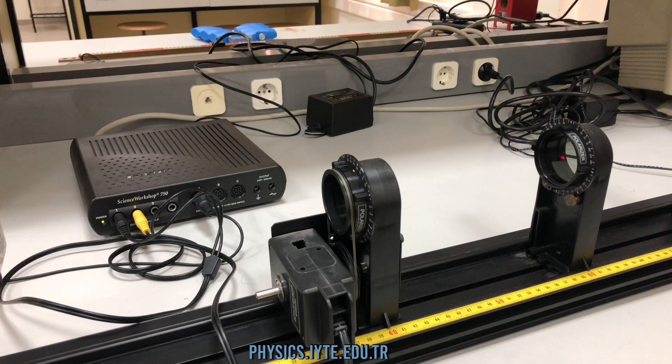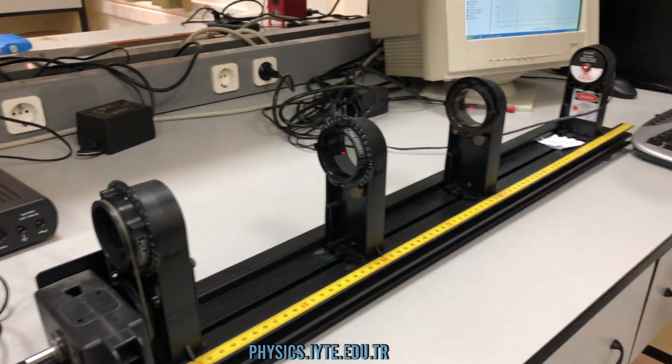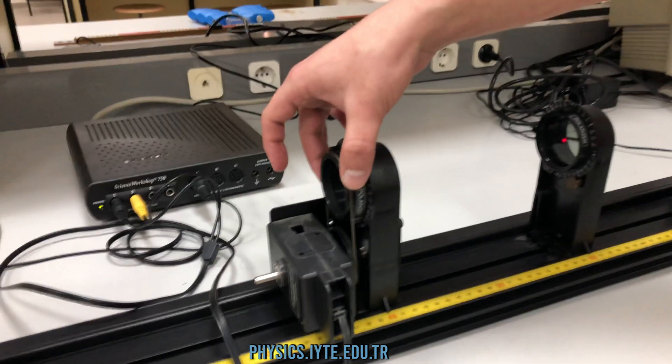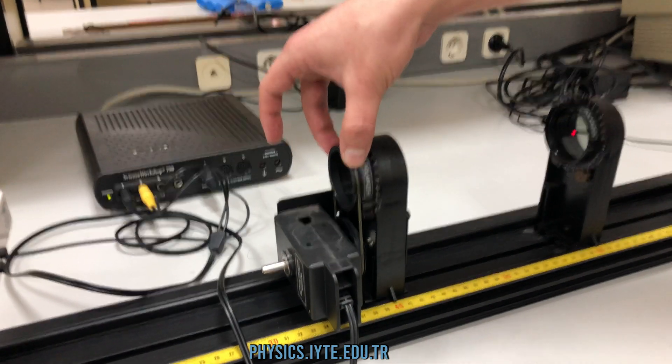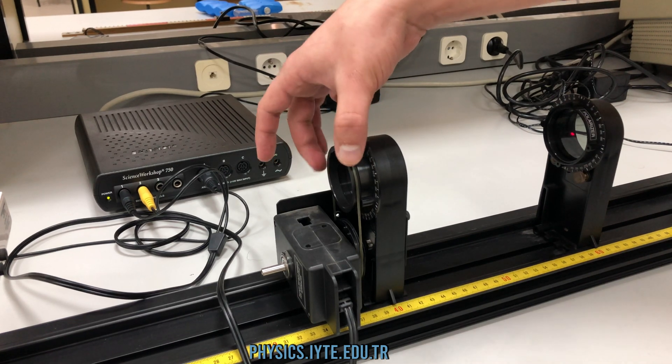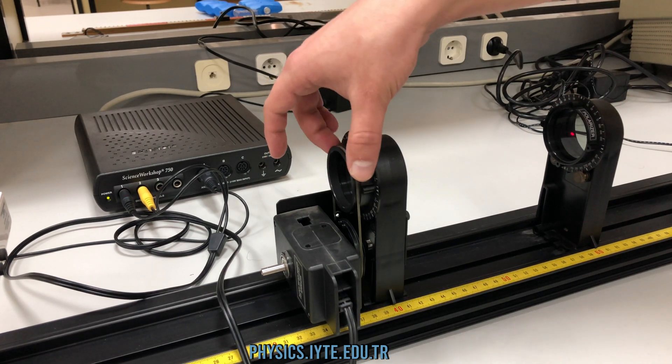So when I come here and start gathering data, and then what I do is just simply change the angle of the third polarizer here. The first two polarizers are already aligned so that we get the maximum intensity.